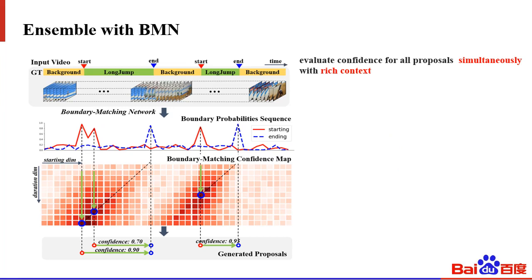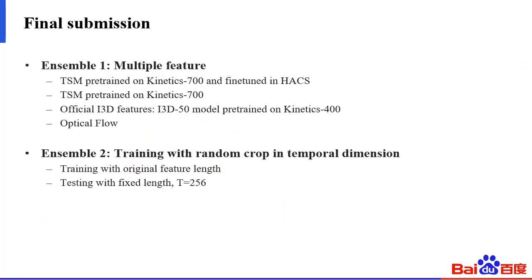We also tried to ensemble with BMN, which evaluates confidence for all proposals simultaneously with rich context. BMN consists of a temporal evaluation module and boundary matching confidence map, evaluating densely distributed proposals to achieve better confidence scores for proposal retrieval. We use this to re-score the original confidence from RepNet. For the final submission, we use four features to train RepNet v2 with temporal random crop, and finally ensemble them with soft NMS.